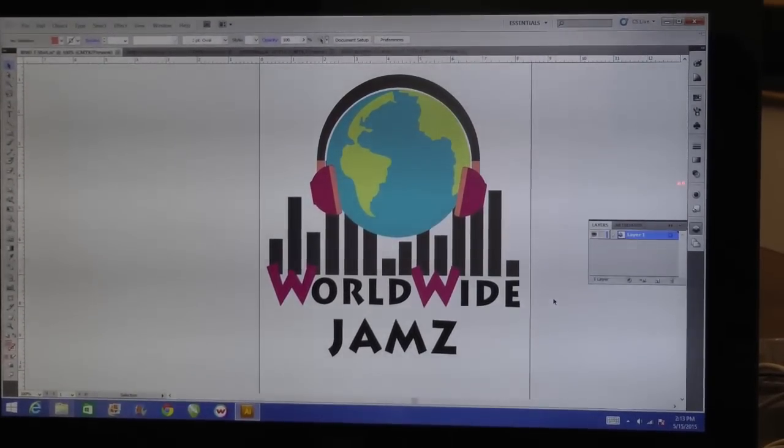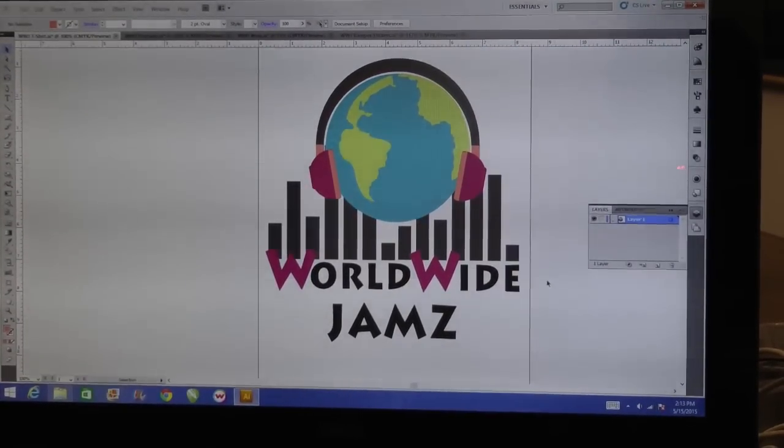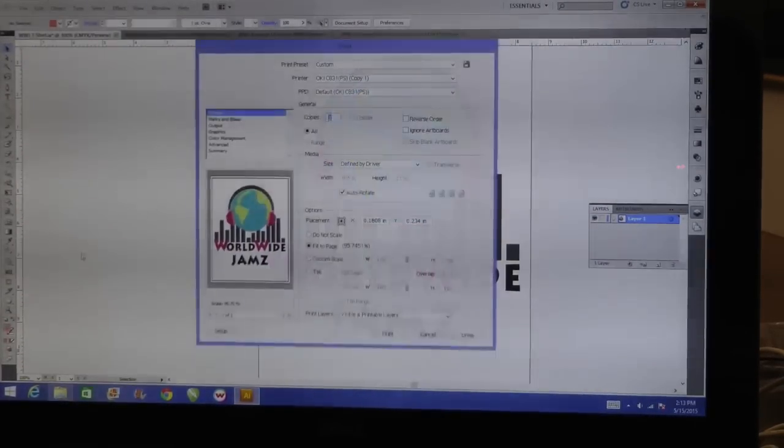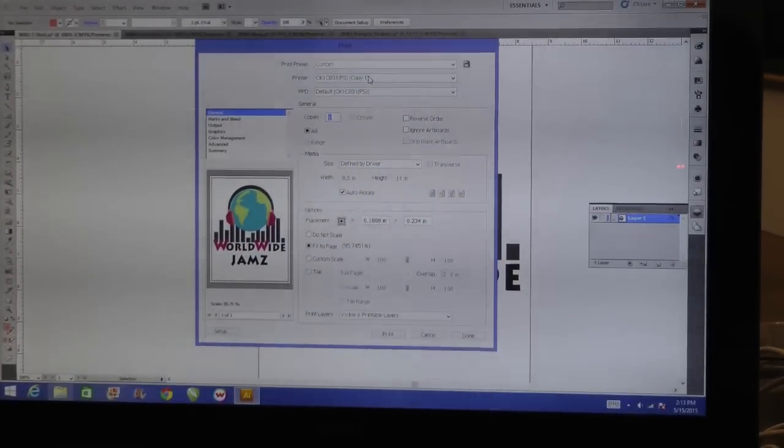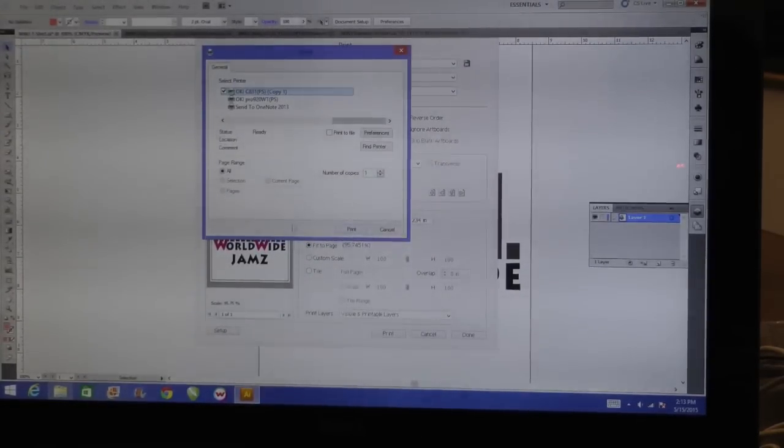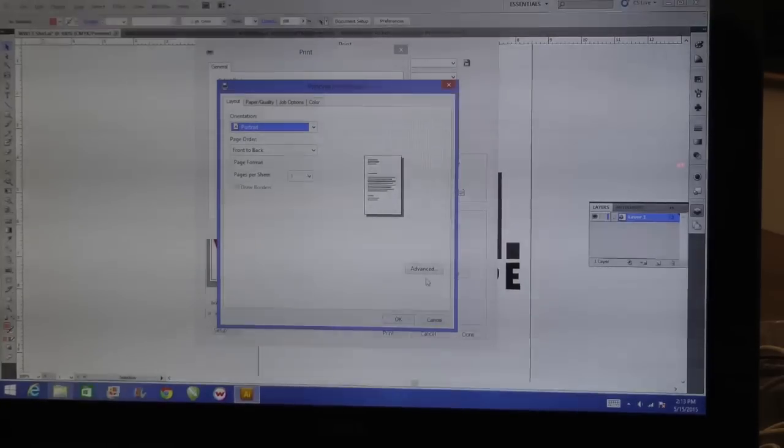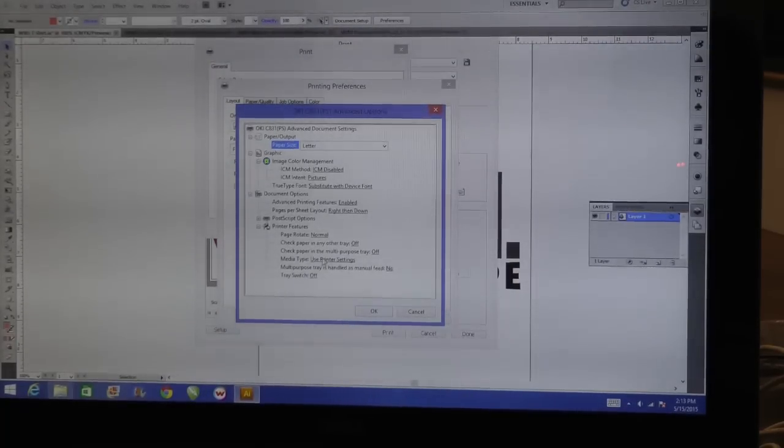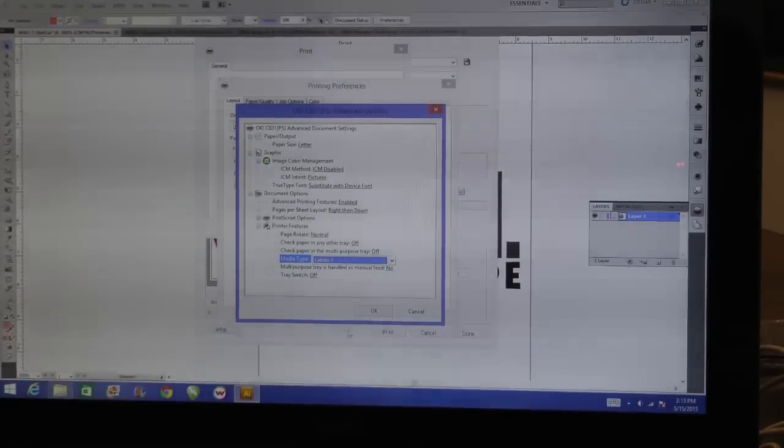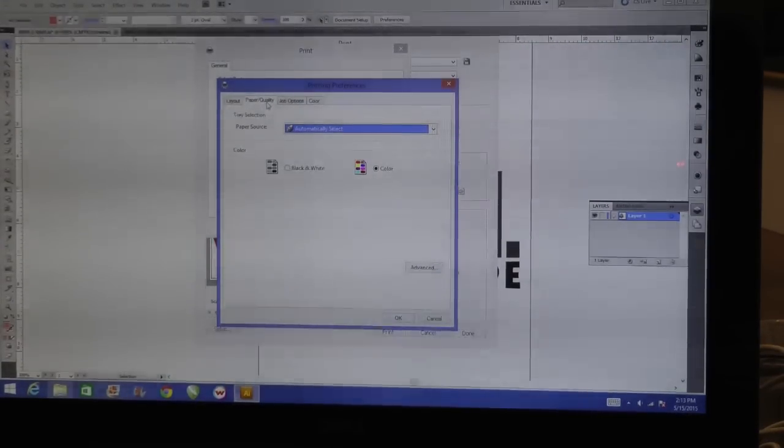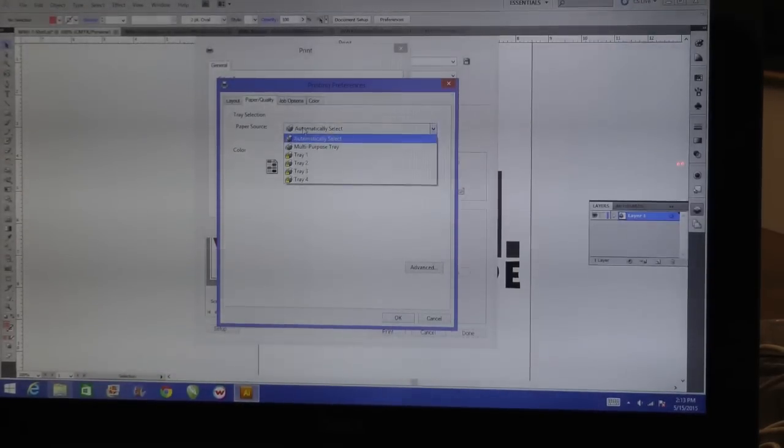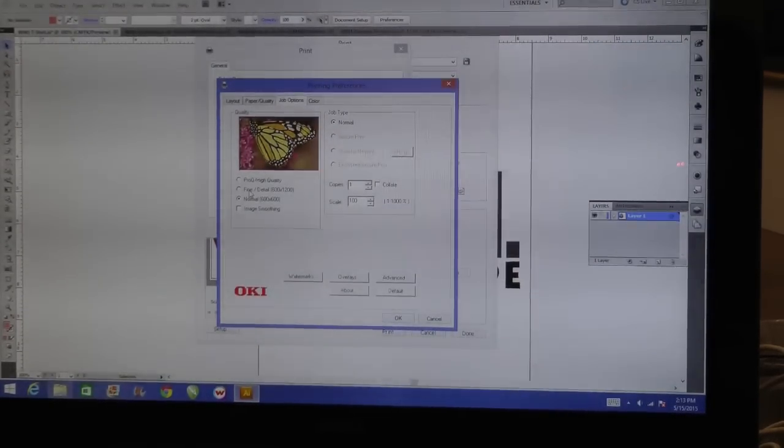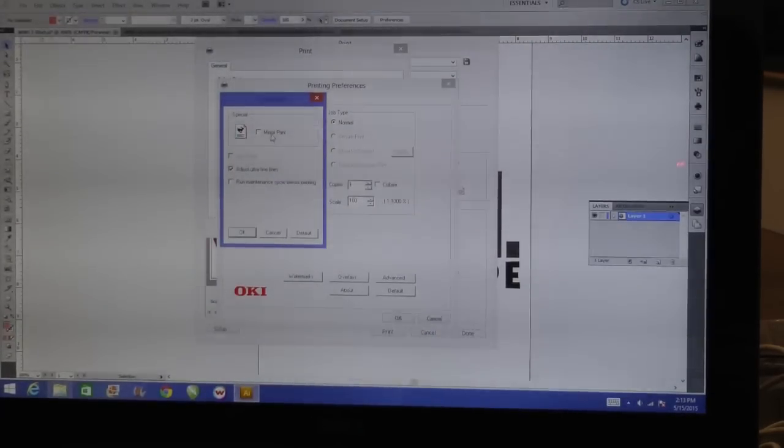Okay, I'm going to be showing you the settings for the C831 with our Forever Laser Transparent paper. Here we have a vector image. You're going to want to go to file print. From there you're going to make sure that you have the right printer set up. And you're going to want to go to setup, preferences. Under layout you're going to want to go to advanced. And there you're going to make sure that you have letter size set up under paper size. And for media type you're going to want to have labels 1. From there you're going to want to go to job options.